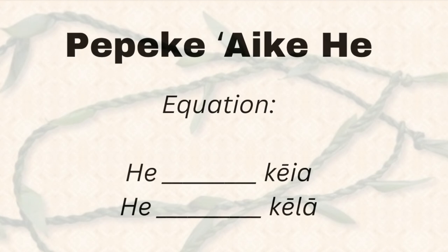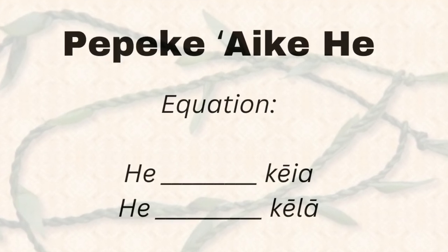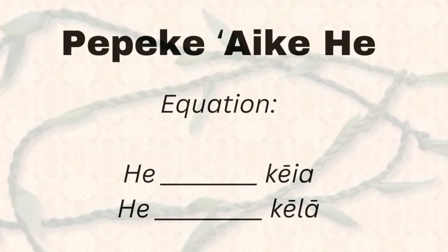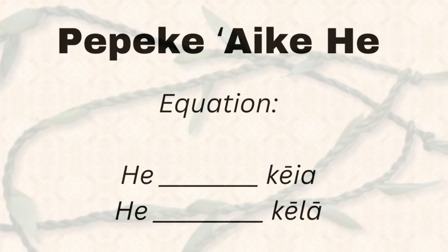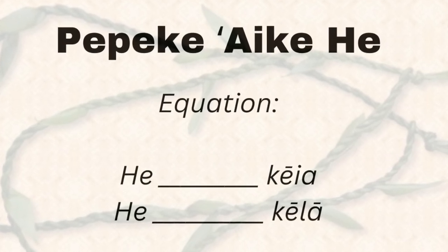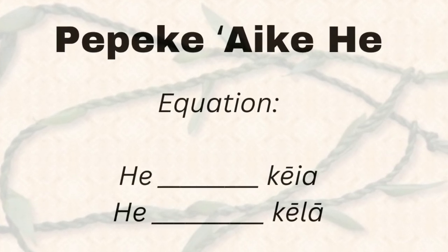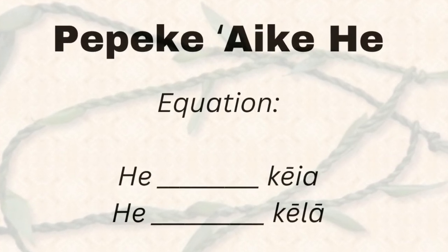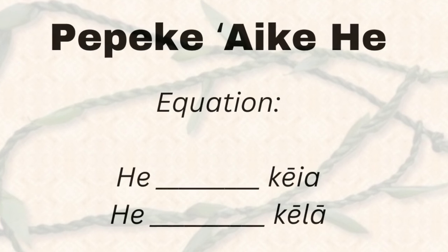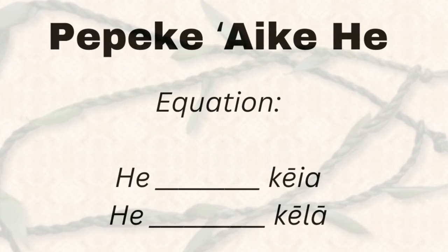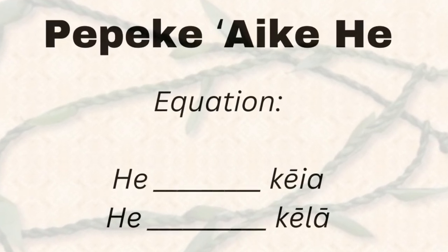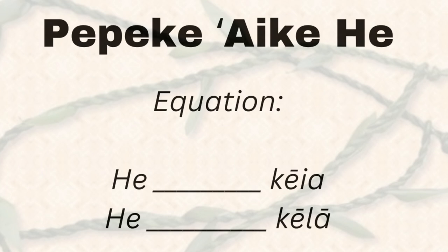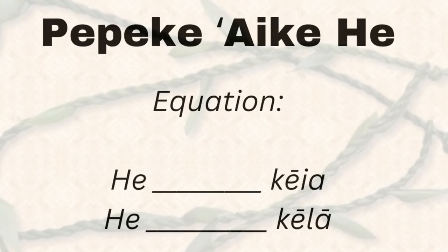To do this sentence structure in Hawaiian, we're going to follow this very simple equation, which is going to be: he blank, and then you're going to use keia for 'this,' or he blank, and then you're going to use kela for 'that.'